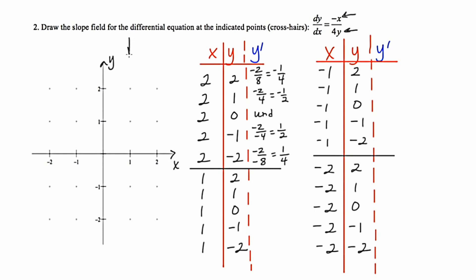Moving to the next column where all x values are 1: we get negative 1 over 8 (already reduced); negative 1 over 4; undefined; negative 1 over negative 4, which is 1 fourth; and negative 1 over negative 8, which is 1 eighth.